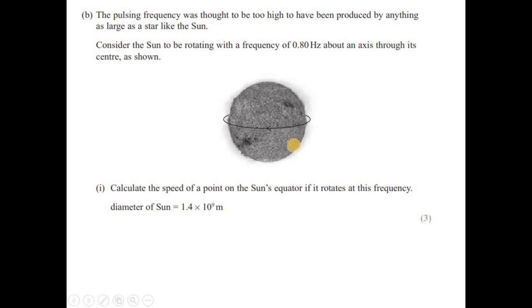The pulsing frequency was thought to be too high to have been produced by anything as large as a star like sun. Consider the sun to be rotating with that frequency about an axis through its center as shown. Calculate the speed of the point on the sun's equator if it rotates with that frequency. Diameter of the sun is given. So you need to find the speed. It is a circular motion. So speed or linear speed v is equal to r omega. And r is the radius of the sun. And you can divide by 2 to get r. And omega is angular frequency or angular velocity in terms of frequency. So you can write v is equal to r into 2 pi f. And the frequency is 0.8 Hertz. So you can substitute all the values. So v would be equal to 3.25 into 10 to the power 9 meter second inverse. This is the velocity of the point at the equator here.